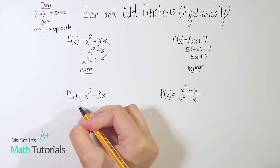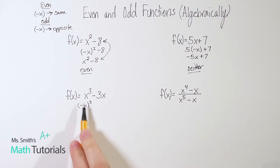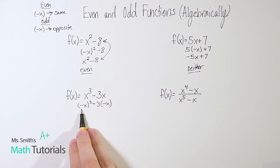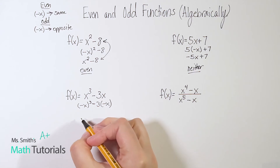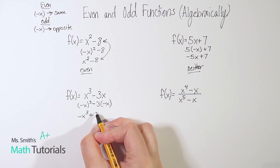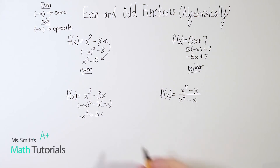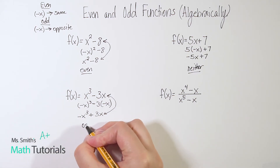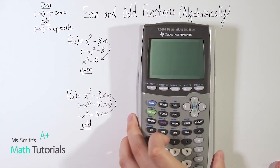For the next one, I'm going to plug in negative x every time I see an x. So I have to do it not only here, but here as well. So we get negative x cubed minus three times negative x, and we're going to simplify. Now negative x cubed — that's negative x times negative x times negative x — and that actually does leave me with negative x cubed. And negative 3 times negative x is going to leave me with a positive 3x. Comparing that to what we had at the beginning, the x cubed flipped sign and the negative 3x flipped sign. So because it's opposite, this is odd.